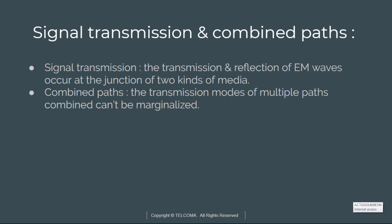This model can automatically identify the preceding EM wave propagation path based on the high precision electronic map and the position of the receiver. It can lead to higher accuracy during network planning.